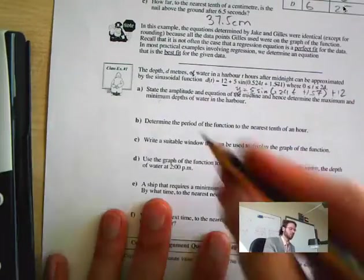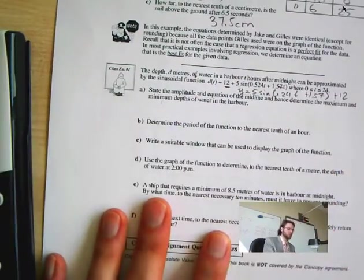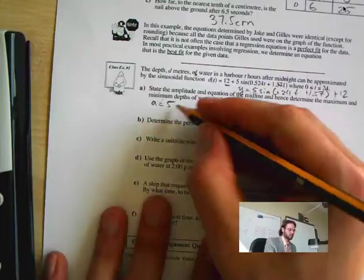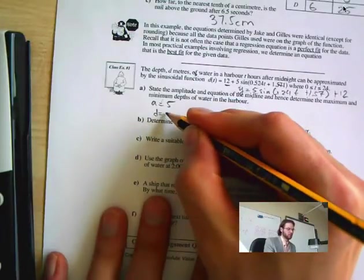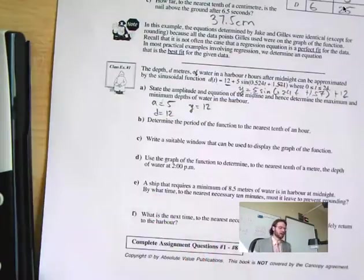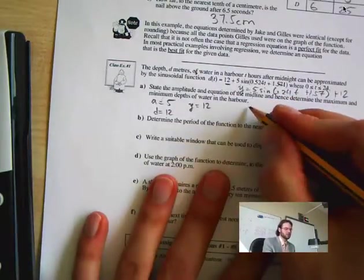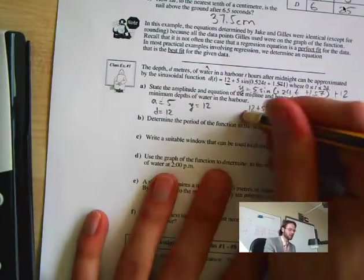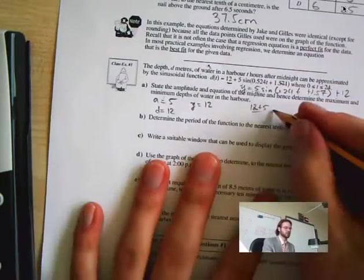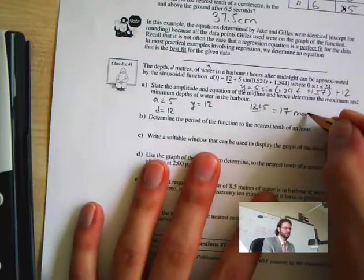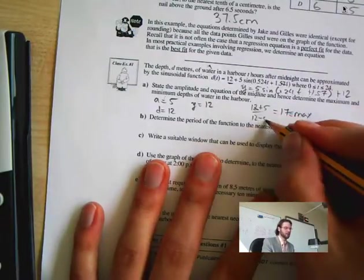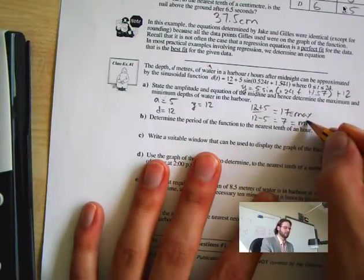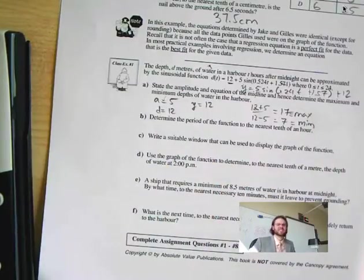It says the amplitude of the equation. A is equal to 5. The midline is 12. D is equal to 12, so that's y equals 12. Now what do we want to do? The maximum and minimum. So that's going to be 12 plus 5, which is equal to 17 is my max. And 12 minus 5, which is equal to 7 is my min. So that's the depth.